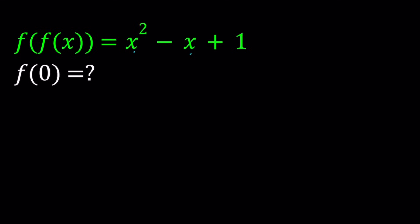So in order to be able to evaluate f of 0, first of all, I'm going to find f of 1. And you're going to see why this is helpful. So let's go ahead and replace x with 1 on both sides of the equation, the original one. If I replace x with 1, I get f of f of 1 equals 1 squared minus 1 plus 1, which is equal to 1.